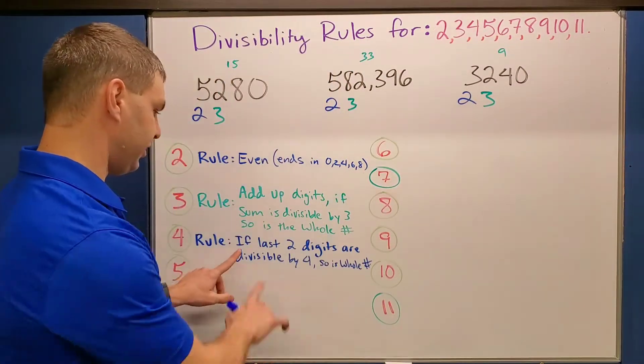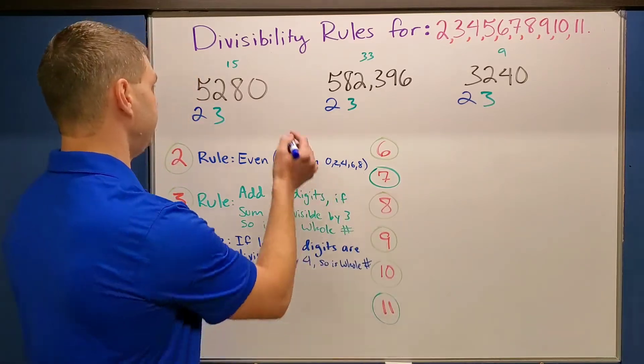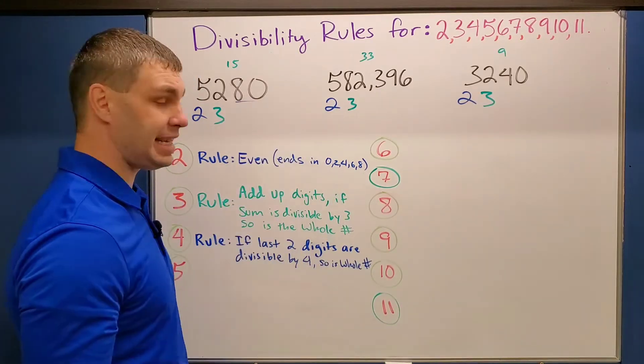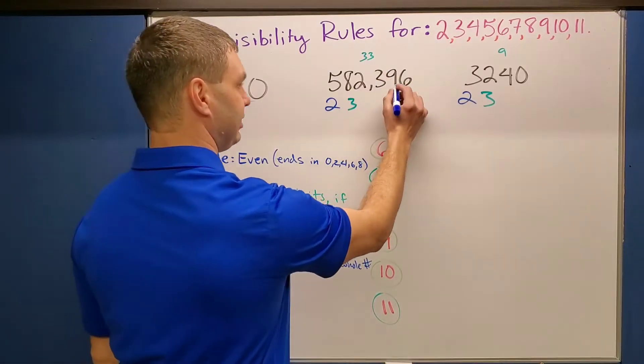The rule for four says if the last two digits of your number is divisible by four, then so is the whole thing. So let's look here. My last two digits are 80. 80 is 20 times four, so this one would work.